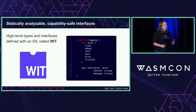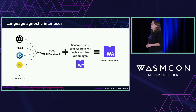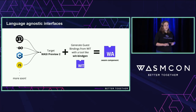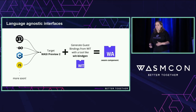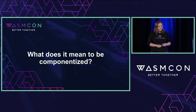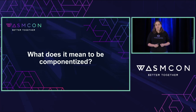WIT also lets us pass in high-level types like strings, enums, and functions. Taking WIT and running tools like WIT-Bindgen, I can output a WASM component that adheres to those interfaces. After that whirlwind tour of the component model, what does it mean to be componentized?